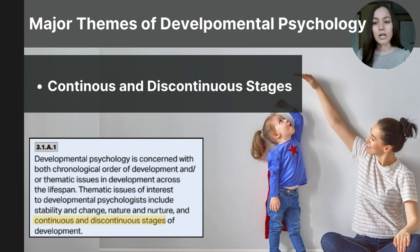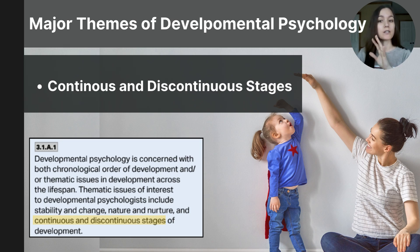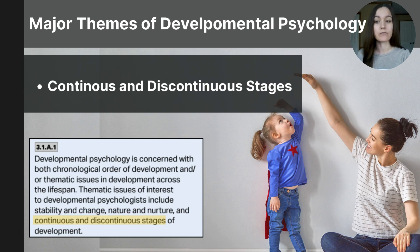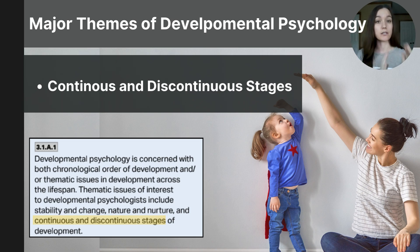Before moving on, let's make sure you have a clear understanding of our major concepts. Nature versus nurture focuses on the interaction between our genetics and our environment. Stability versus change focuses on whether our traits endure over time or change with time. And continuous versus discontinuous stages focuses on whether we develop gradually and continuously or in abrupt, clear stages.